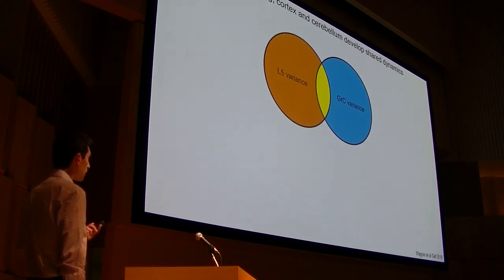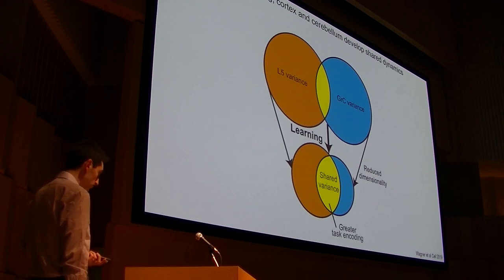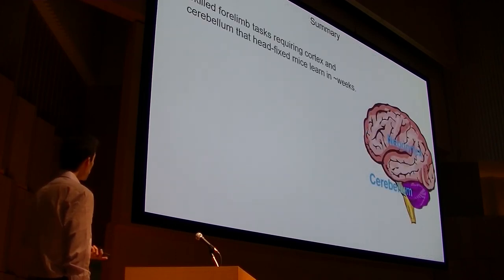So there's a sort of broad summary that we have of what's happening in these ensembles over the course of learning, is that early on, you have a sort of relatively more diverse set of neural activity patterns in these two areas, with relatively less overlap, and over the course of learning, they're converging onto a narrower set of activity patterns that are more similar to one another and encoded the task more strongly.